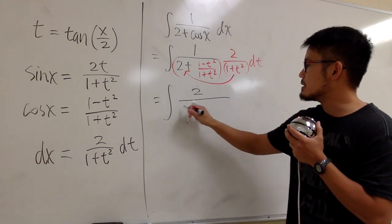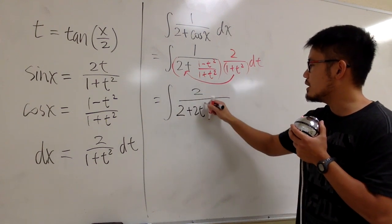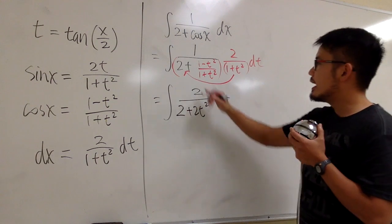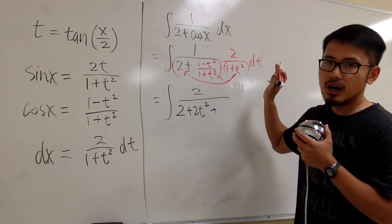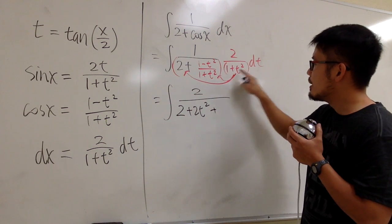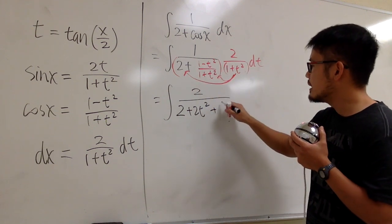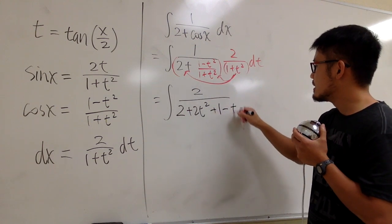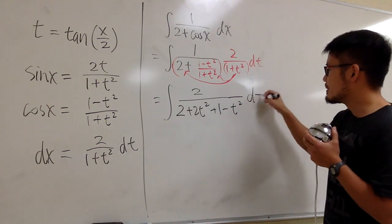2 times 1 is 2. 2 times t squared is plus 2t squared, right? And then we add it with, we take this, multiply with this part. 1 plus t squared and 1 plus t squared will cancel each other out. So we just have the 1 minus t squared. And this is it for the denominator. And we have the dt right here.